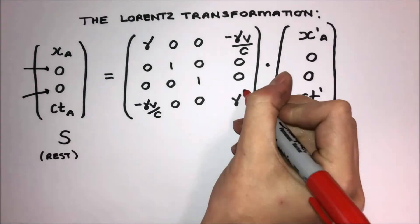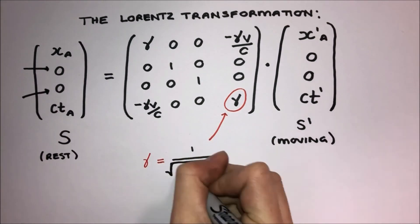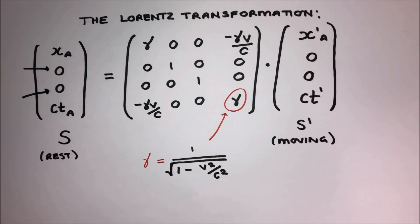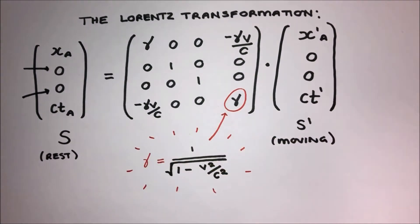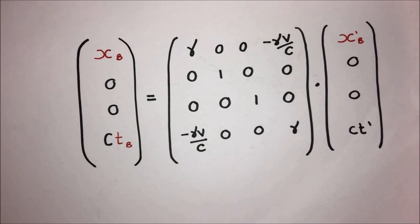The quantity denoted by Gamma is equal to 1 over the square root of 1 minus V squared over C squared. This expression pops up a lot in special relativity, and so it's given this symbol to make life simpler. We get the same transformation describing XB.